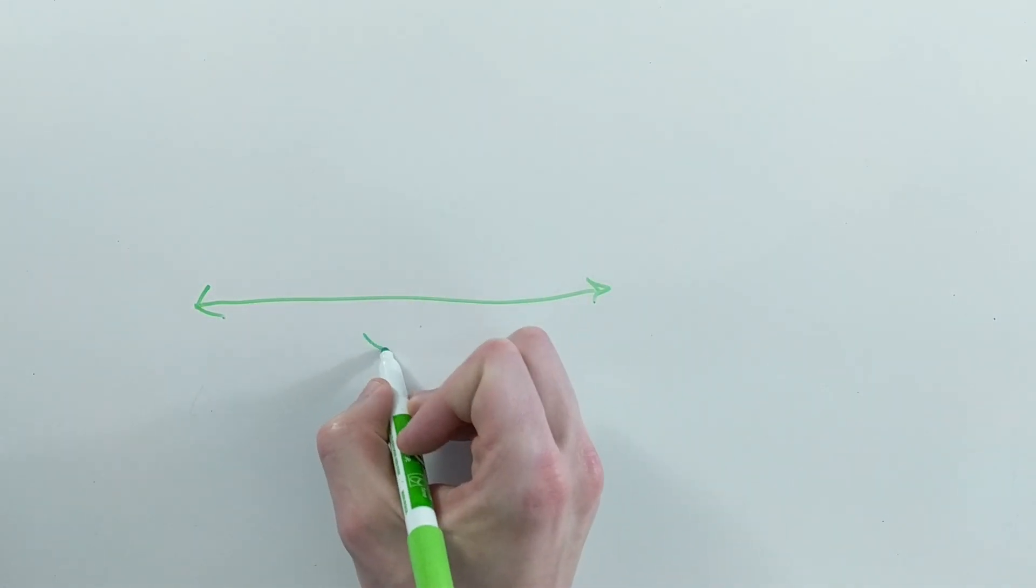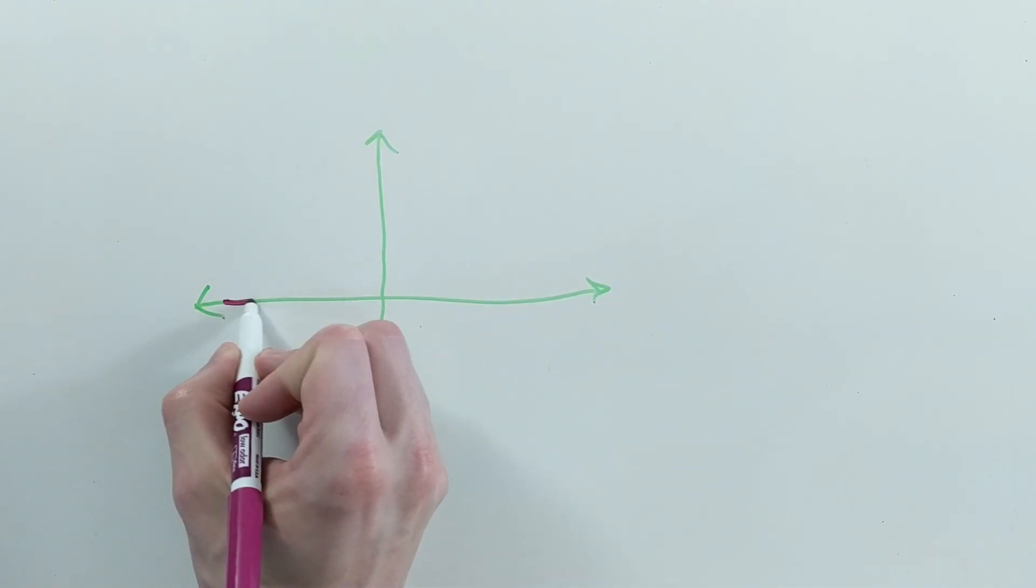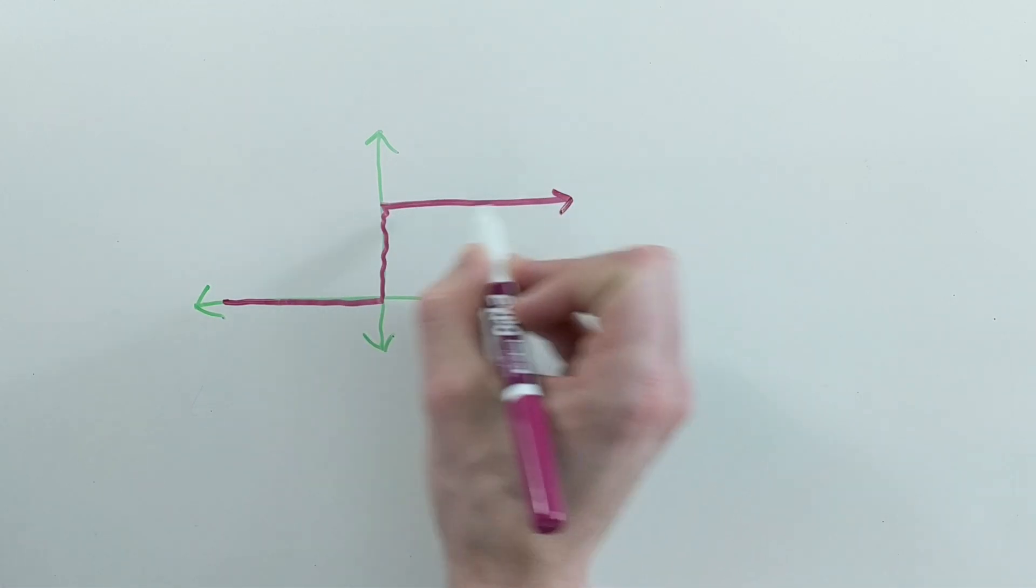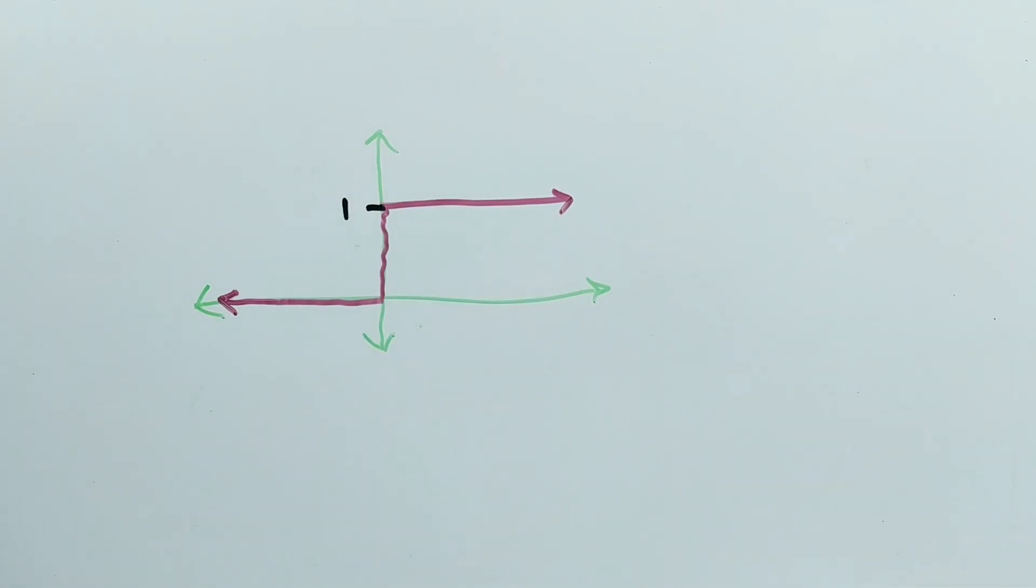The easiest way to represent the action potential is by having a function that is either active or not active, that is, 0 if the neuron isn't active and 1 if it is active. That looks something like this, and it's called the Heaviside step function.